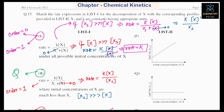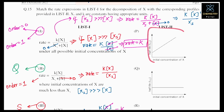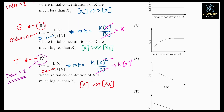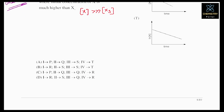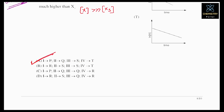Since the first rate expression can exhibit both zero order and first order behavior, the graph will be a combination of zero and first order. The graph starts a little above the origin, representing this combined behavior. So the first expression matches graph P. Final answers: first → P, second → Q, third → S, fourth → T. The correct answer is option (I): P, Q, S, T.